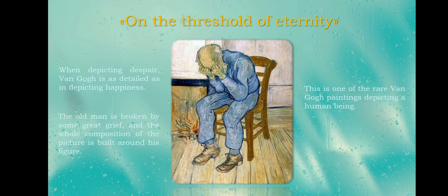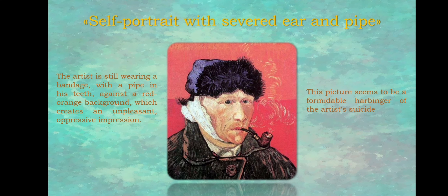This is one of the rare Van Gogh paintings depicting a human being. His whole posture expresses despair, but the picture looks oddly light — as if, even while seeing fear and pain, the artist doesn't want to part with the idea that life can still be beautiful.